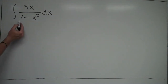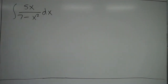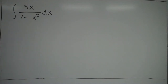In this case, the derivative of the bottom is equal to negative 2x. Looking at the top, it's 5x — the x is there, so that's important, but the constants are obviously off. I have the 5 on top, and I want the top to be negative 2x instead of 5x.